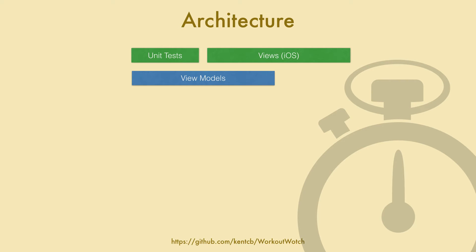Underneath that we've got the view models. The blue here means it's agnostic of the platform and it will be in a portable class library. Now if you're not familiar with MVVM, you can think of the view model as exactly what it sounds like — it's a model for the view. We get as much of the code as we can into the view model because that allows us to share more code across different platforms, and also we can test it better.